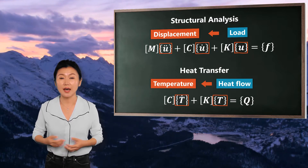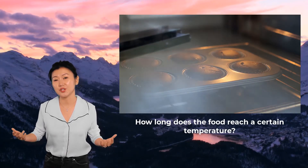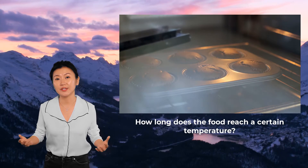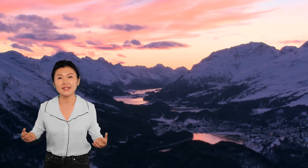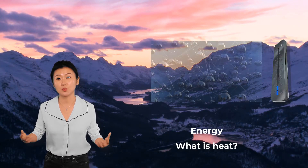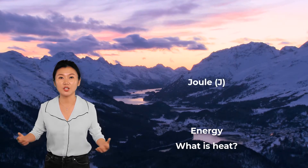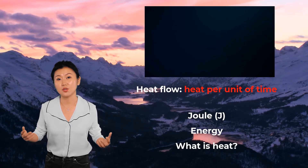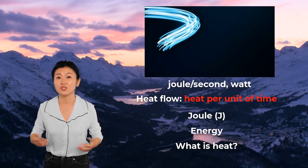With this governing equation, a simple heat transfer problem statement could be: when we turn on the oven, how long does it take for the cookies to reach 190 degrees Celsius? Here, the oven is the heat source, and the temperature of the cookie is what we want to determine. Heat is a form of energy — it is produced when a rising temperature causes atoms and molecules to move faster. The unit of heat is Joule. For heat flow, the quantity Q in the governing equation is the amount of heat transferred per unit of time, and naturally the unit for heat flow is Joule per second, which is also called Watt.